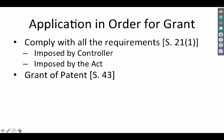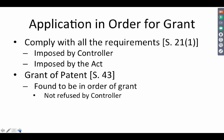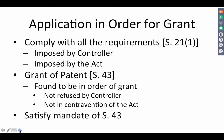When these two conditions are complied with, the application becomes ready for a grant. The FER is a document issued to ensure that the application reaches the point described in section 43 — found to be in order for grant, not refused by the controller, and not in contravention of the act. This mirrors the language of section 21. Section 21 mentions when an application will be treated as abandoned, and section 43 says when an application will be treated as complete for grant.